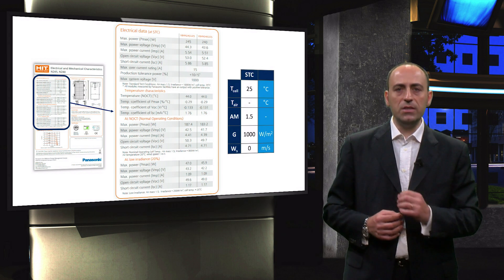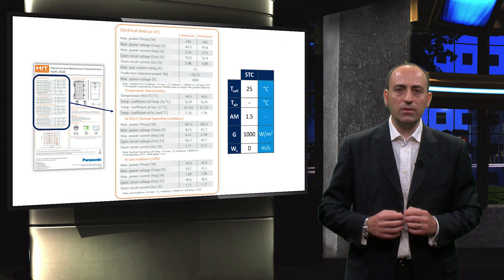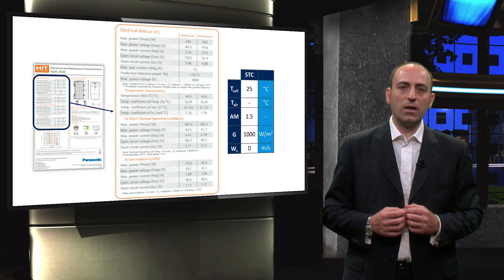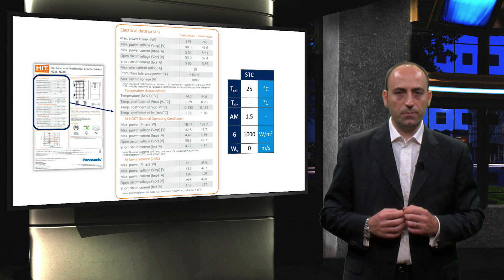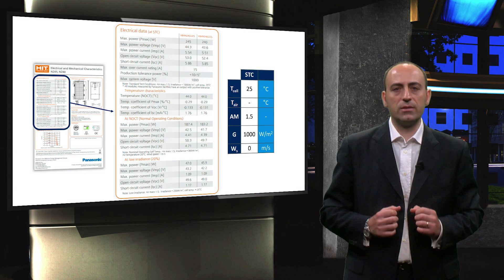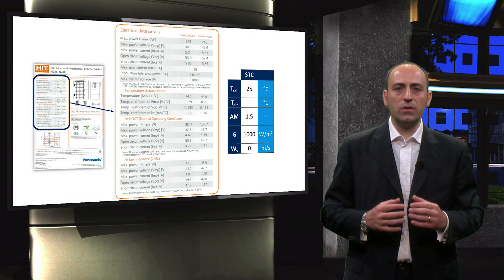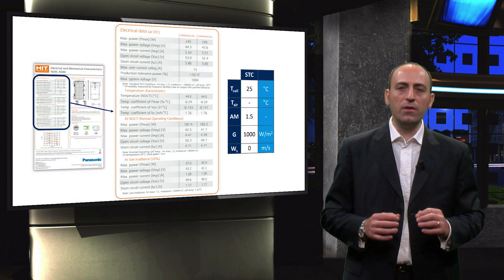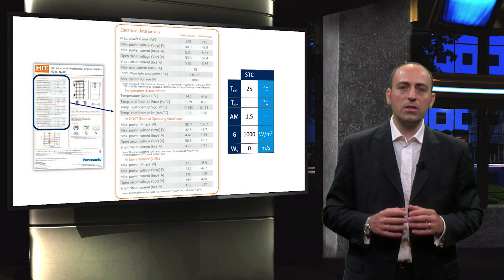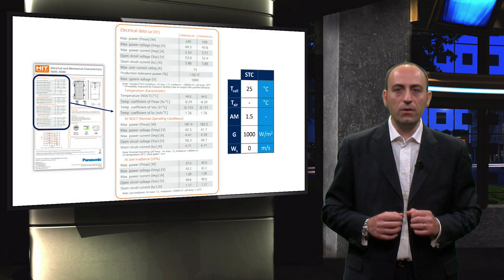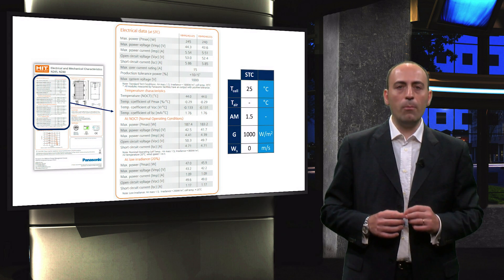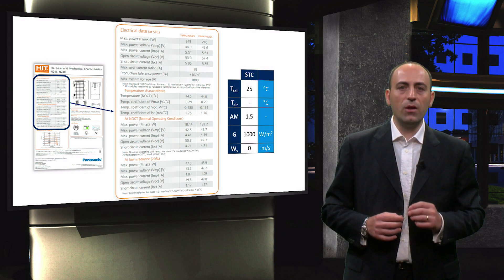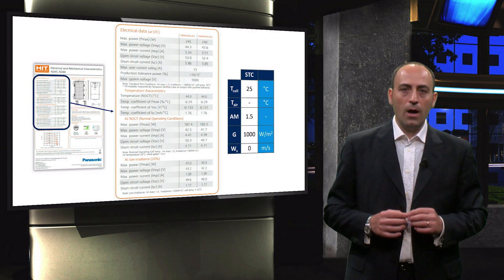Let's see what STC means. In a relevant table, electrical parameters characterized in this test are listed. During the standard test conditions, the temperature of the cell is kept constant at 25 degrees centigrade, the irradiance falling on the module is 1000W per square meter, considering the AM 1.5 solar spectrum and wind velocity 0.